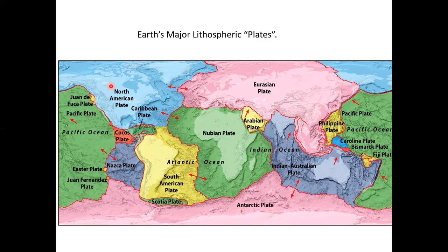A plate can consist of both continental and oceanic material. For instance, the North America plate includes Greenland, part of the Atlantic Ocean basin, Alaska, and even a portion of Russia and a snippet of Japan. We can't confuse continents themselves with plates — they're two different things.